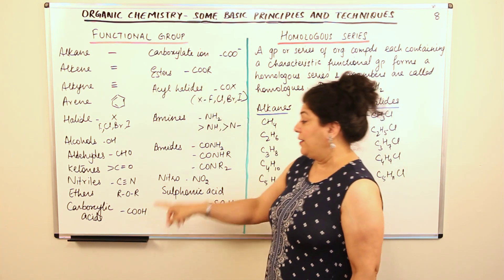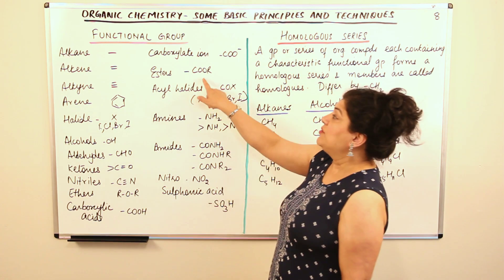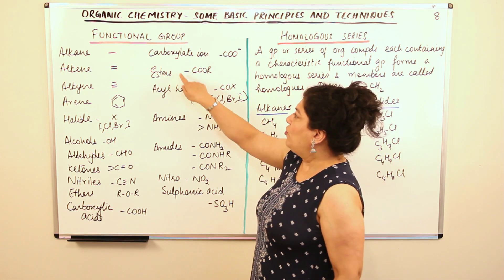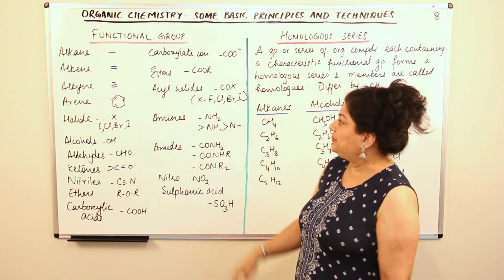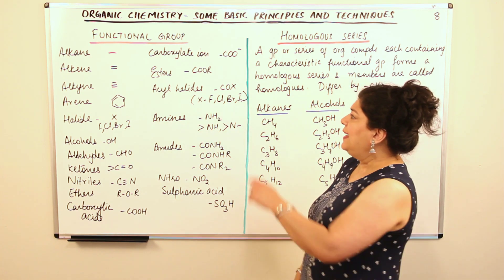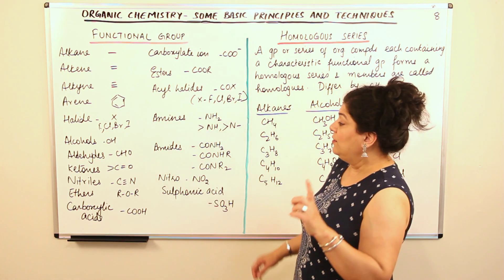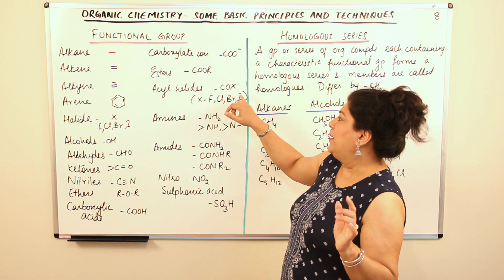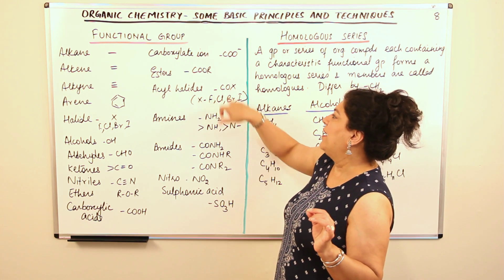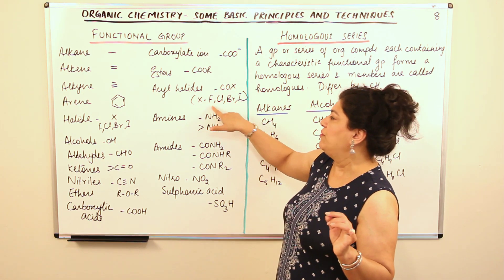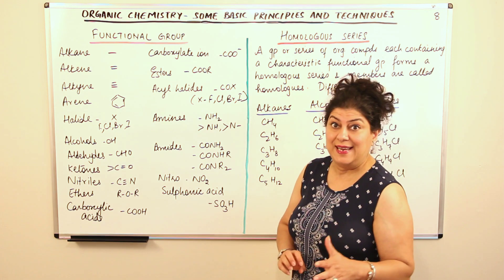Esters are COOR — if in place of hydrogen you have an alkyl group, it becomes an ester. So R-COOR. Acyl halides are COX, where in place of H you have X, that is a halogen — fluorine, bromine, or iodine. These are known as acyl halides.